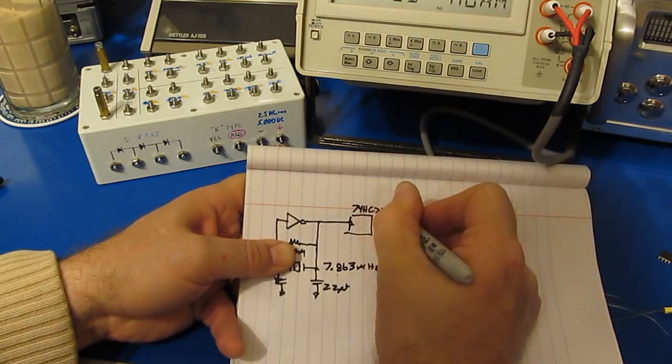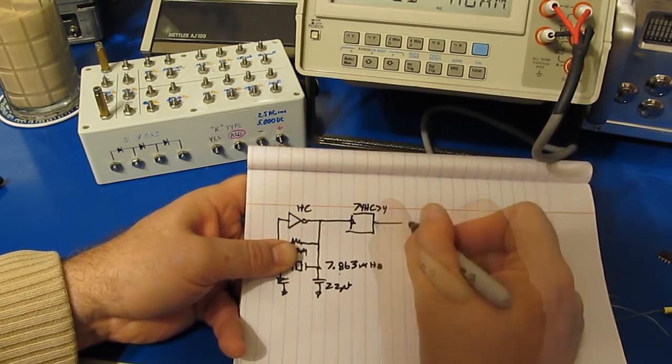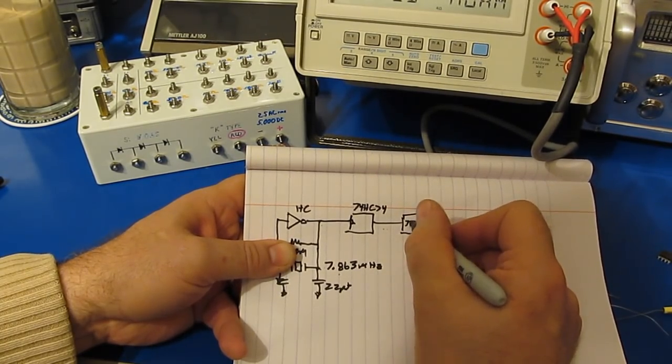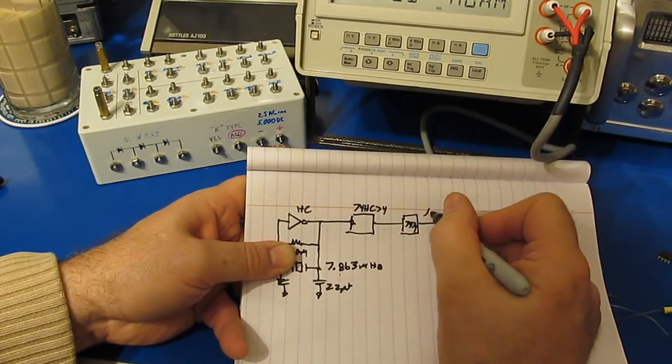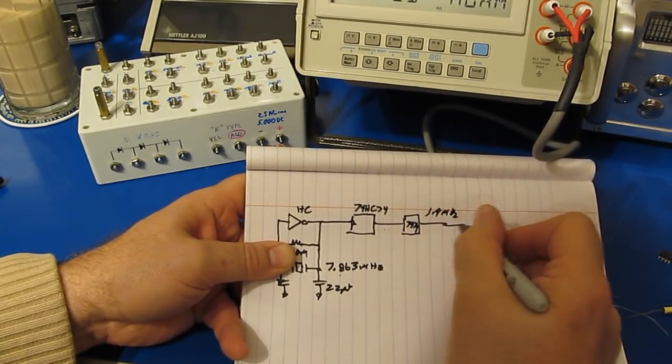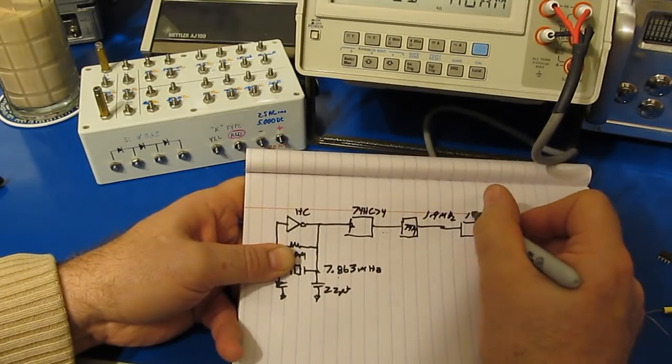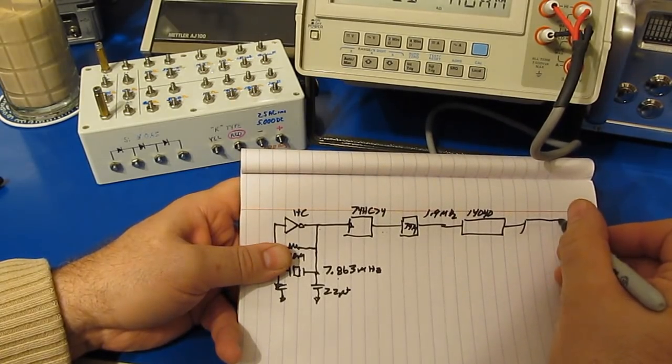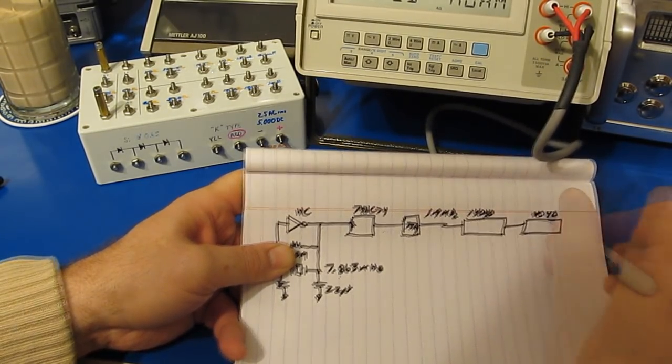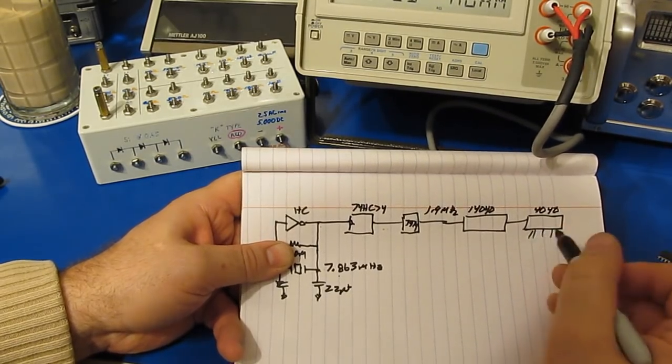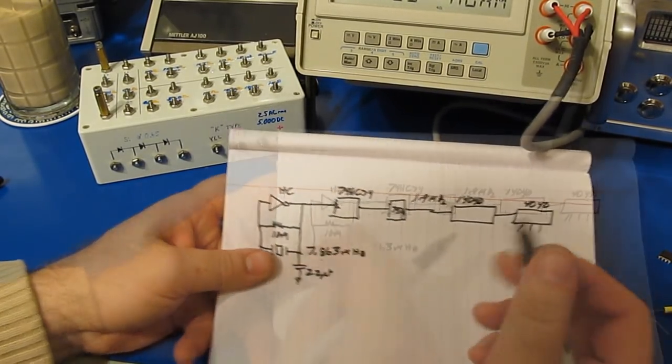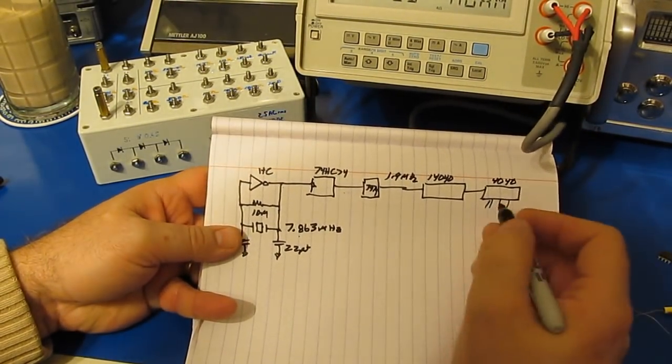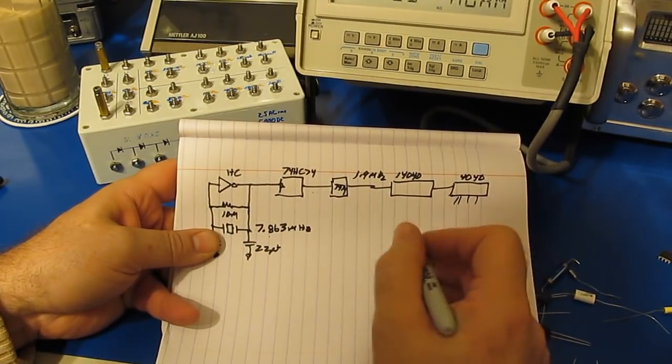This goes to a 7474, it's also an HC part, and this goes to a second 7474 and this gives me my 1.9 megahertz. And then this goes to a 14040 which is just a large counter which then drives another 14040. And then I'm tapping off of this to get my different frequencies. So again being crystal controlled this is fairly accurate out here as far as the 60 Hertz that I generate.